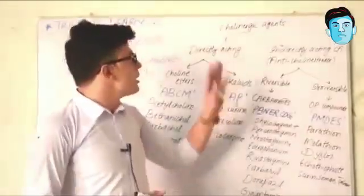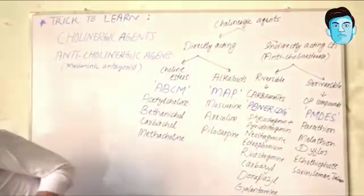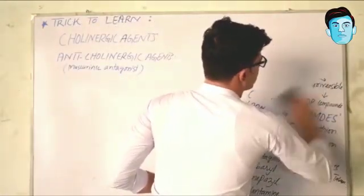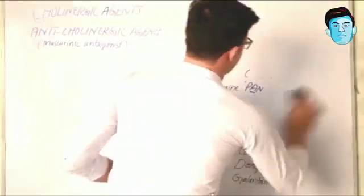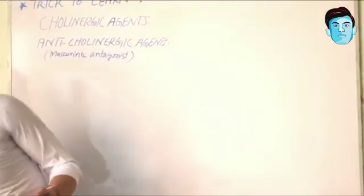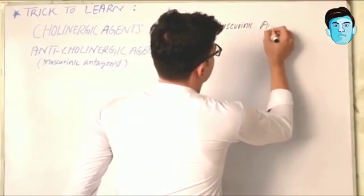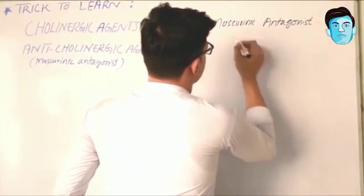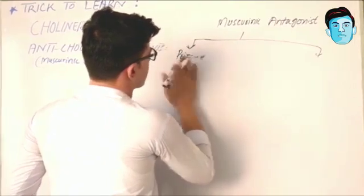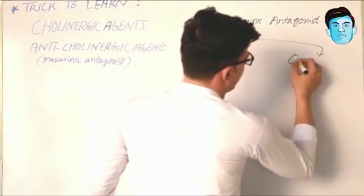So that covers the classification of cholinergic agents. Now we are talking about another group of drugs: the anticholinergic agents. Among anticholinergic agents, we are more focusing on muscarinic antagonists. Muscarinic antagonists are classified into two groups: tertiary amines and quaternary amines.